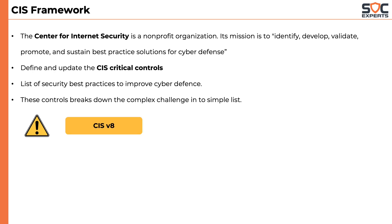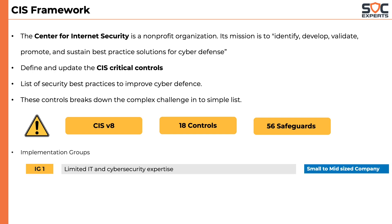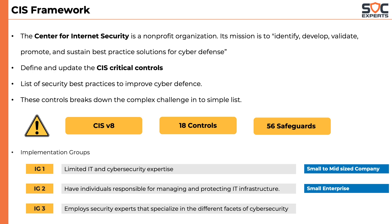The latest version of CIS is version 8, proposed in May of 2021. It has a total of 18 controls and 56 safeguards. CIS also defines what level of companies should apply what kind of safeguards — CIS calls them implementation groups. IG1 is a company that has limited IT and cybersecurity resources, typically a small to medium-sized company with less than 1,000 employees. IG2 is a company that has individuals responsible for managing and protecting IT infrastructure, usually a mid-sized company with around 3,000 to 5,000 employees. IG3 is an organization that employs security experts specializing in different facets of cybersecurity, typically large enterprises with more than 10,000 employees.